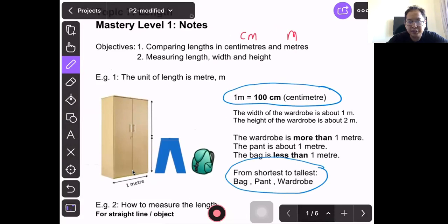Next we need to understand what is length, width, and height. Talking about this wardrobe down here, this is known as the width. This is known as the height. Now we go on to example two.